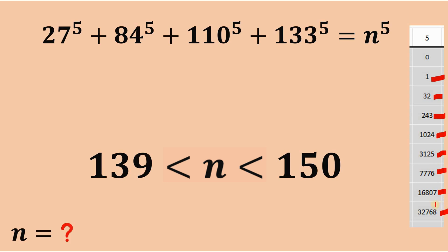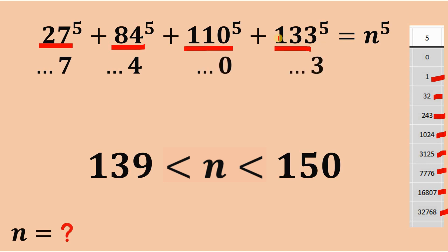Applying this pattern: 27 raised to the fifth power has last digit 7; 84 raised to the fifth power has last digit 4; 110 raised to the fifth power has last digit 0; and 133 raised to the fifth power has last digit 3. The sum of the last digits is 7 plus 4 plus 0 plus 3 equals 14, so the last digit of n raised to the fifth power is 4. This means n itself must end in 4.